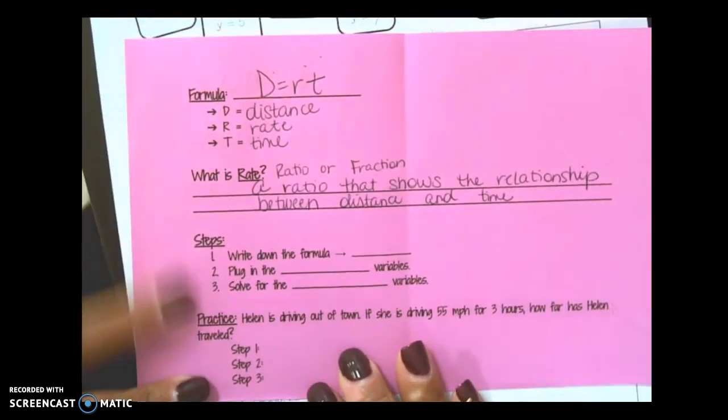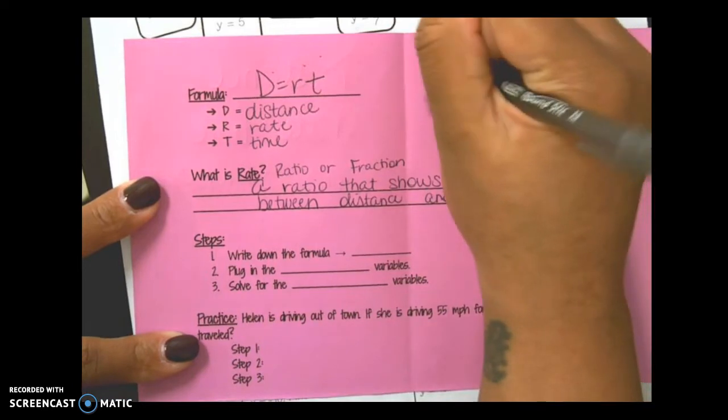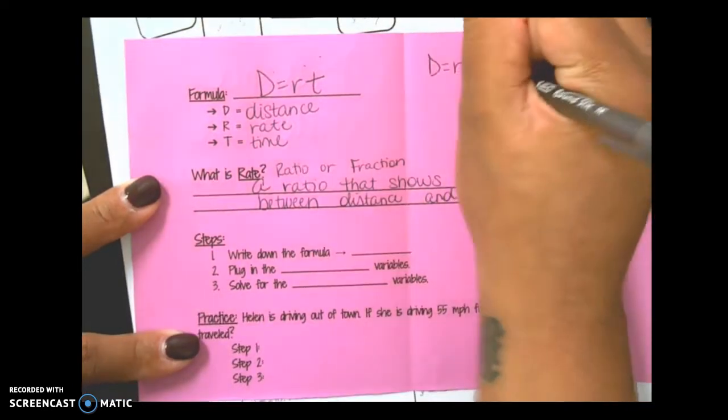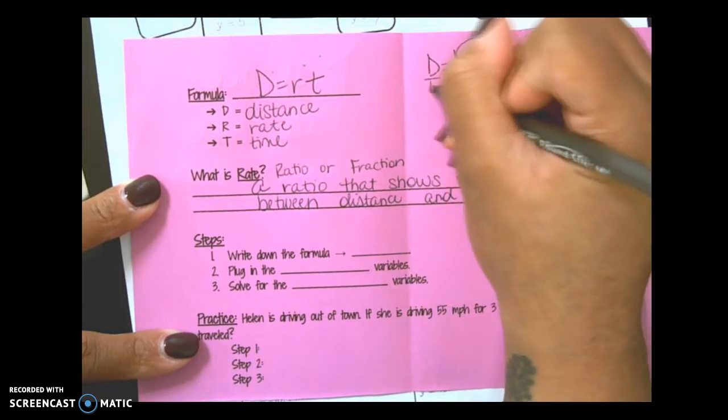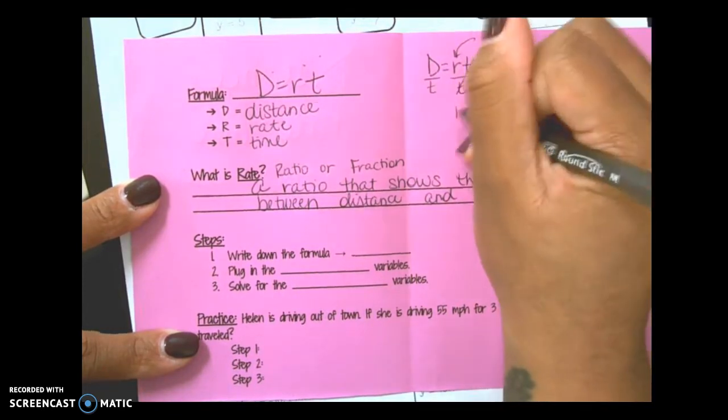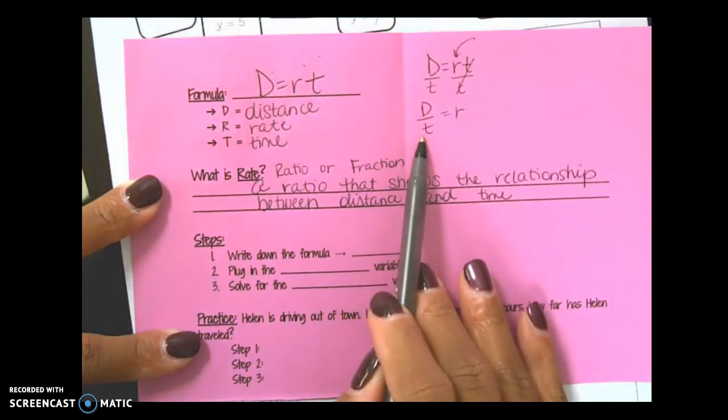So in today's class you literally rewrote this in other ways. You took D equals RT and you solved for R by dividing both sides by T. Cross out the T's. R equals D over T. That's the relationship between distance and time.